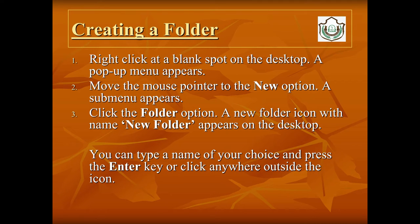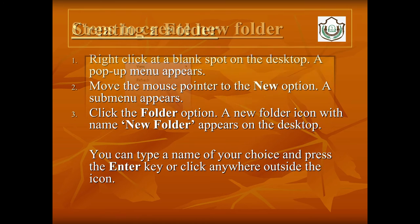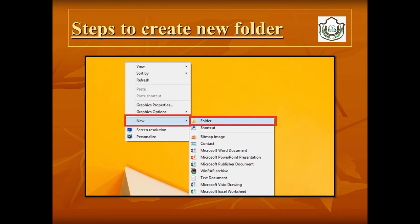Now let us learn how to create a folder in Windows 10. Just right-click at a blank spot on the desktop — a pop-up menu appears. Move the mouse pointer to the New option and a sub-menu appears. Then click on the Folder option. A new folder icon with the name 'New Folder' appears on the desktop. You can type a name of your choice and press the Enter key, or click anywhere outside the icon. In summary: right-click anywhere on the desktop, then click on New Folder.